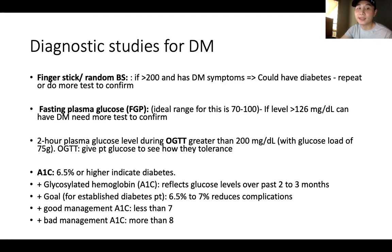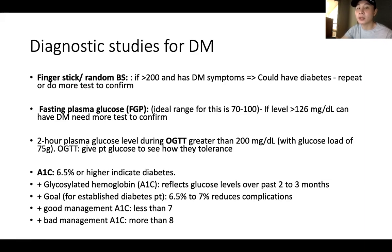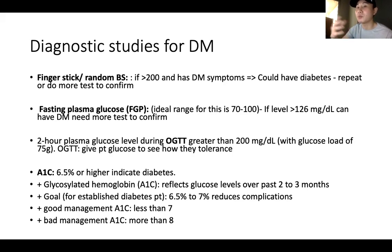Next, fasting plasma glucose: the patient has to fast for six to eight hours before the test. The ideal range after fasting is 70 to 100. If the level is more than 126, they may have diabetes mellitus. However, this is still not a confirmatory test — we need more tests in order to confirm the diagnosis.